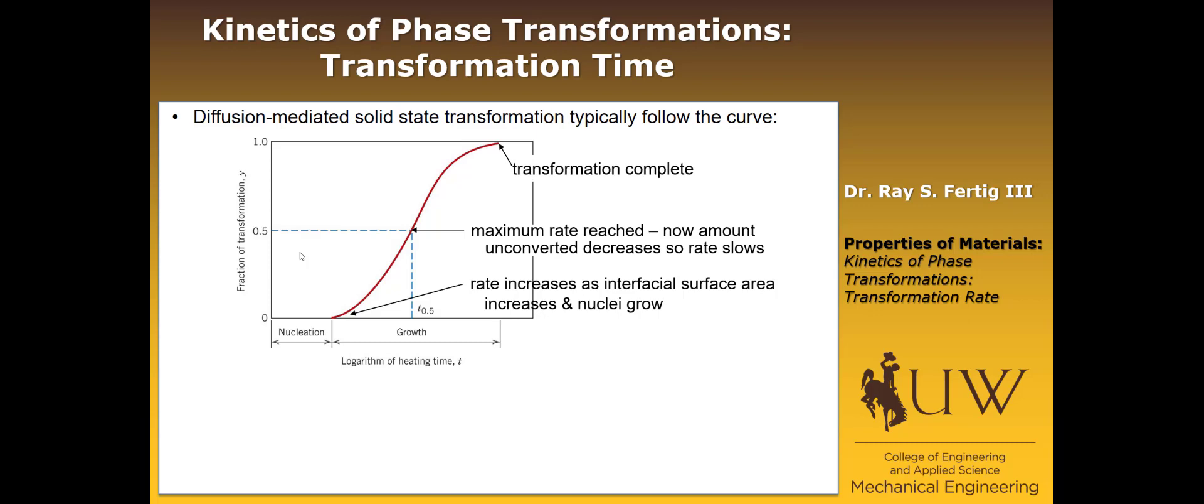The equation that we use to describe this transformation is called the Avrami equation, and it's a fairly simple equation that uses the fraction transformed and just sets it equal to 1 minus e to the negative kT to the n.